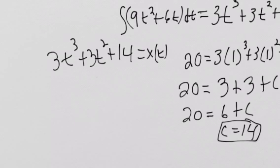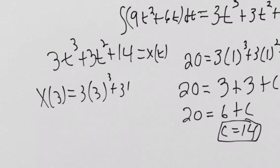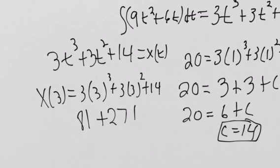Now it's telling me to plug in 3 to see what my position is at time 3. So x of 3 is 3 times 3 cubed plus 3 times 3 squared plus 14. 3 cubed is 27 times 3 is 81, plus 3 times 3 squared is 27, plus 14.